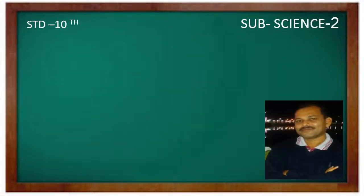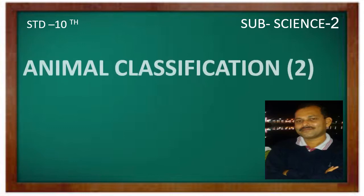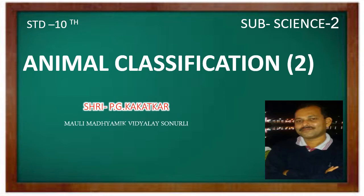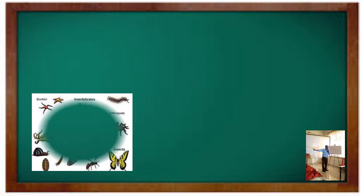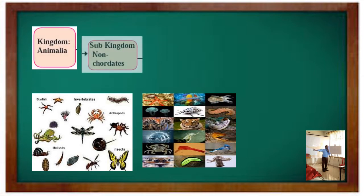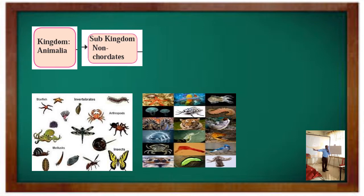Hello to our students. In our previous class we already learned about the history of animal classification and different criteria of animal classification. In this class we have to learn about the different characteristics of different phylums and all about sub-kingdom non-chordates. In kingdom Animalia there are two sub-kingdoms: non-chordates and chordates.